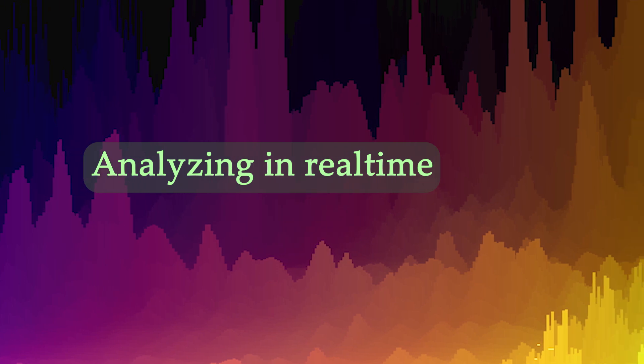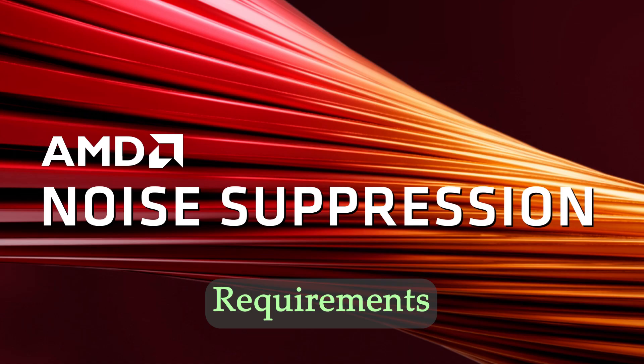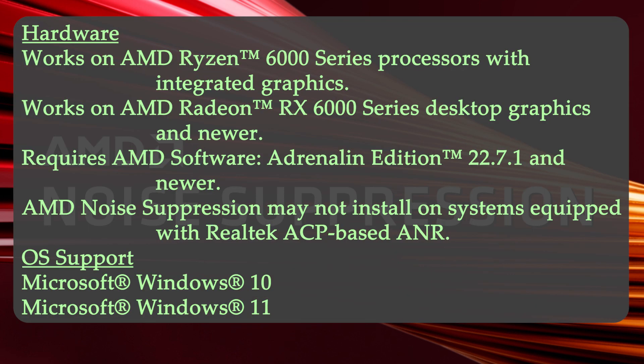AMD Noise Suppression technology has requirements. For the hardware, it works on AMD Ryzen 6000 series processors with integrated graphics, and also on AMD Radeon RX 6000 series desktop graphics cards and newer versions. This requires AMD Software Adrenaline Edition 22.7.1 and newer. AMD Noise Suppression may not install on systems equipped with Realtek ACP-based ANR. The supported operating systems are Microsoft Windows 10 and 11.